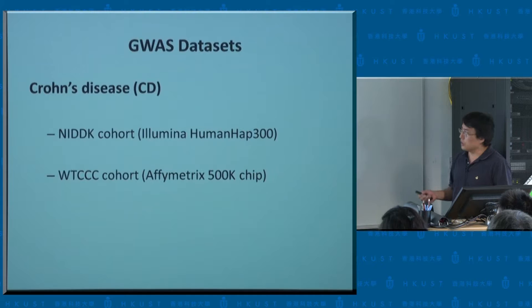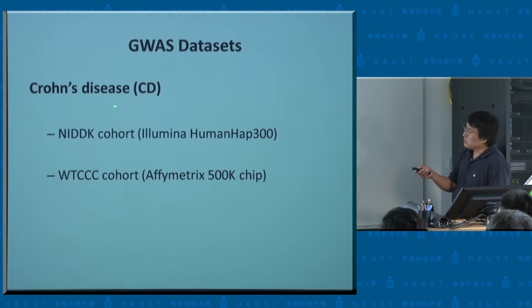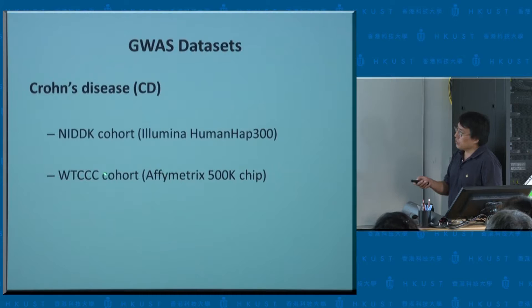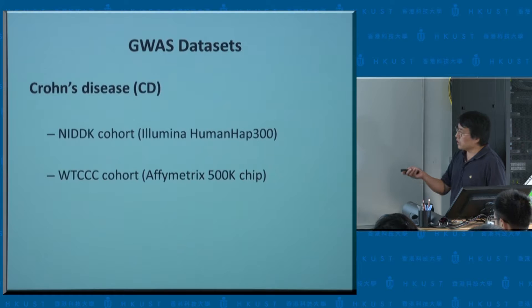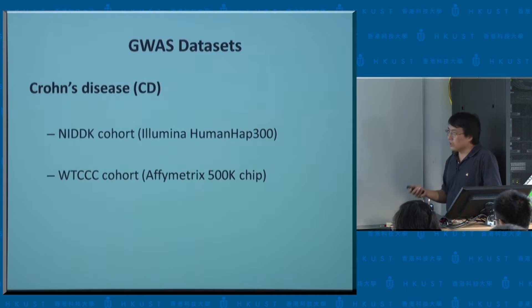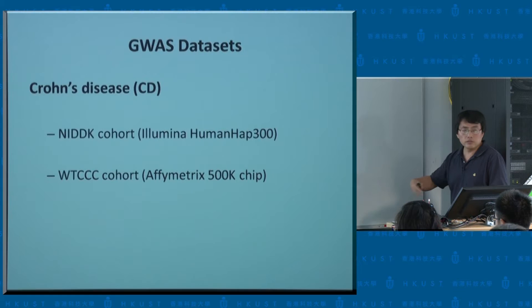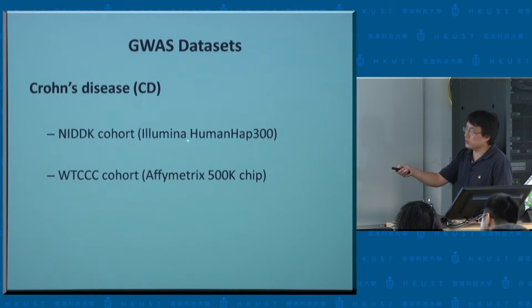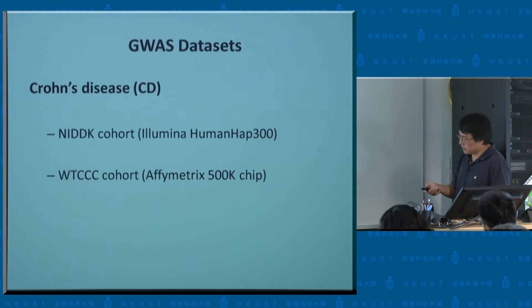We went back to Crohn's disease to see whether there's any evidence this rewiring concept may work, since Crohn's disease has a lot of known signals. We looked at two different datasets: an NIDDK cohort collected by Judy Cho with about 1,000 subjects total, and a Wellcome Trust Case Control cohort with about 3,000 controls and 2,000 cases. They use different genotyping platforms. For the microarray data, we pulled one dataset from the Gene Expression Omnibus published in an inflammatory bowel disease journal — about 99 cases and 72 controls.